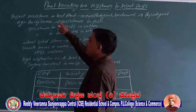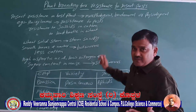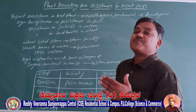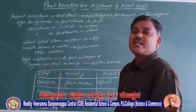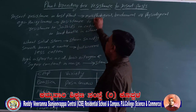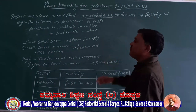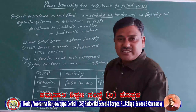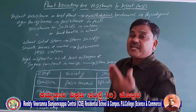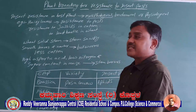Insect resistance in host plants may occur through morphological characters, biochemical characters, or physiological characters. These physiological, biochemical, and morphological characteristics make a plant resistant against a number of insect pests.